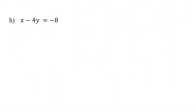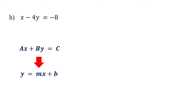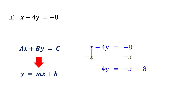We are almost done. Pause the video and try our last example. First, rewrite it in slope-intercept form. Start by subtracting x from both sides. Then divide both sides by negative 4. These cancel out, leaving y. The negative signs cancel out, leaving 1/4 x.